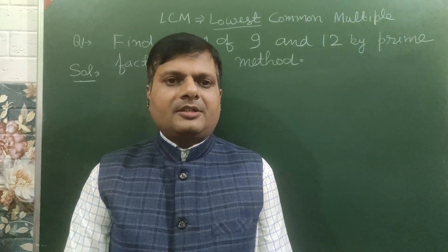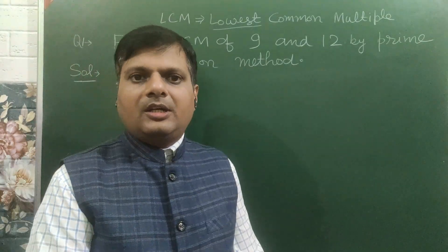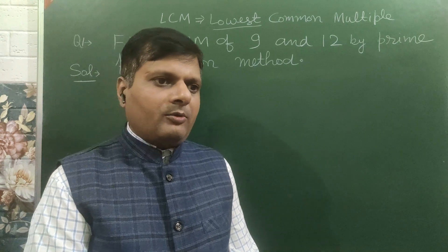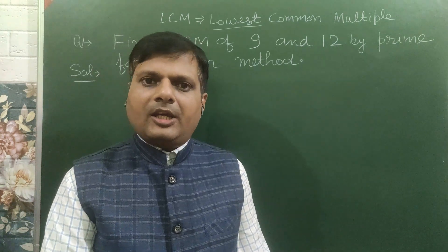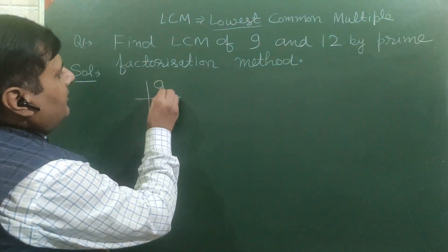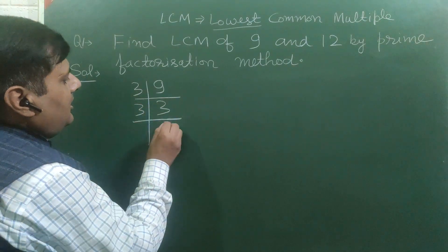Now same question by prime factorization method. Earlier we solved by writing multiples of 9 and 12, here we will factorize 9 and 12. Just look here, 9: we have to write prime factors, 3 threes are 9, 3 ones are 3.